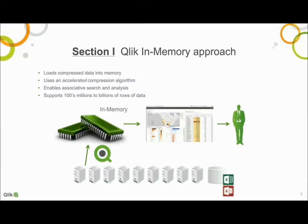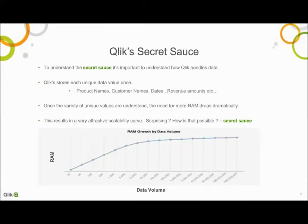Qlik's compression algorithm accelerates as data volumes increase — what does that mean? When Qlik loads data from databases, data systems, and other sources, it keeps track of every single unique data value. For each data field, Qlik will store the text value of each unique value just once — one copy of each of your full product names, customer names, dates, revenue amounts, etc. This is the case for all data types. Then, as Qlik gradually comes to understand the full variety of possible data values within each field, it can achieve economies of scale even as you continue to load more and more rows of data.